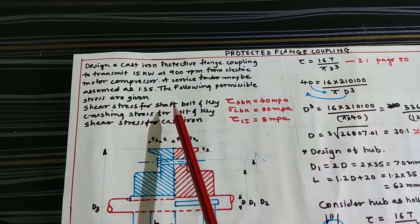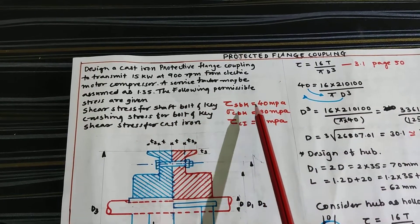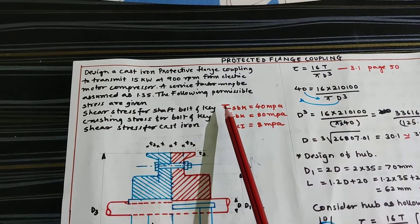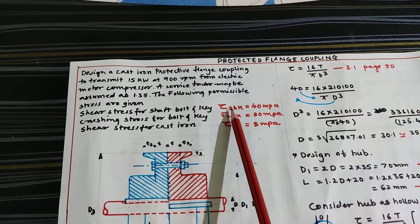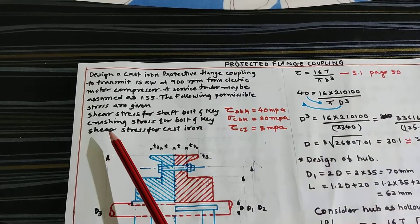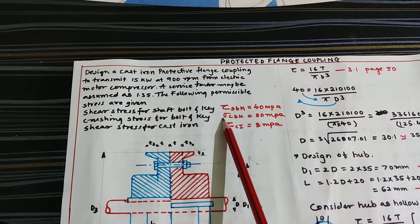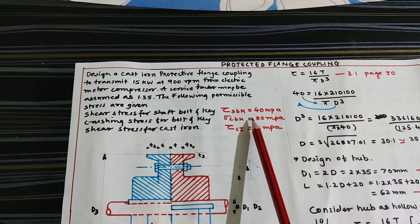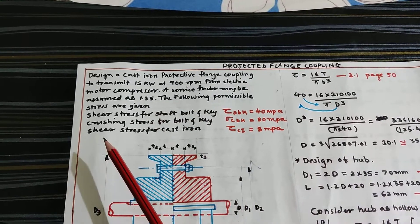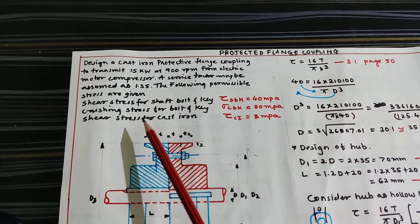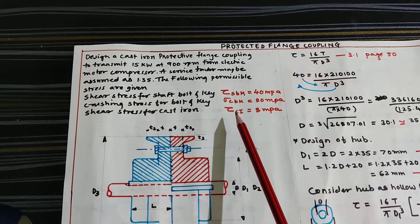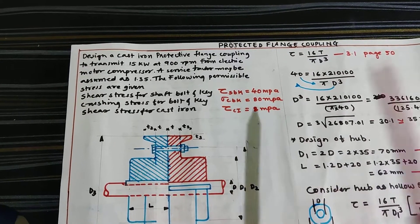The following permissible stresses are given: shear stress for the shaft, bolt and key is 40 MPa; crushing stress sigma c for bolt and key is 80 MPa; whereas shear stress for cast iron tau ci is 8 MPa.